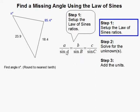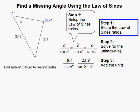What this means is side A over the sine of angle A. For example, 18.4 — its opposite angle is what we call A. And side B here, its opposite angle would be this, which is why we have 23.9 over sine of 85.4 degrees.